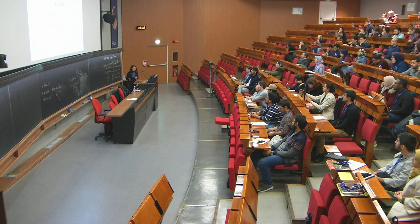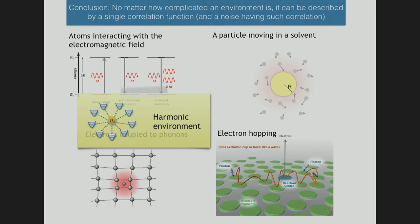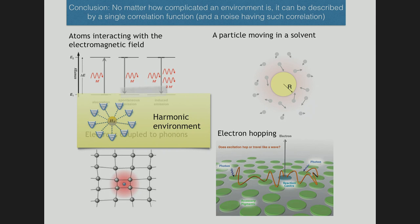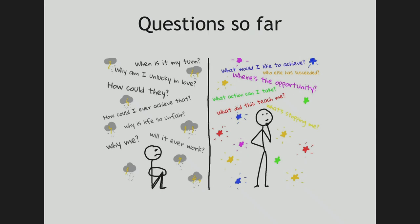Let me go to the next part. We have about 25 minutes until the coffee break. We have seen that we have different types of environments, but many of them can be described as a set of independent harmonic oscillators connected to the system in a star configuration.